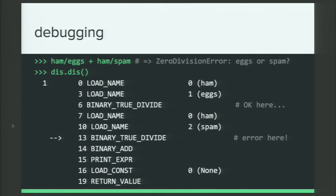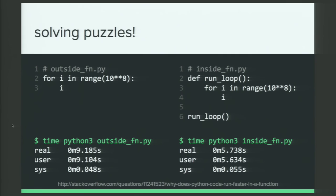And it can also be a helpful tool to solve puzzles. Not just the kind that the sponsor has, but also the kind that I mentioned at the beginning, where we have this for loop which takes a lot longer outside of a function than in, and yet in the source code it looks pretty much identical. So let's try and get a little bit more insight here by dissing this outside function module and the run loop function from the inside function module and see how they compare.